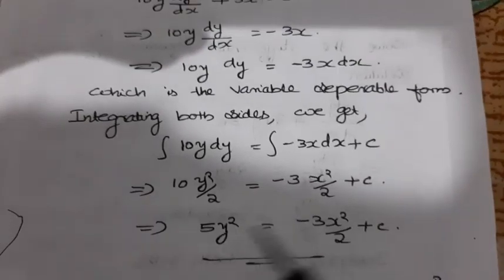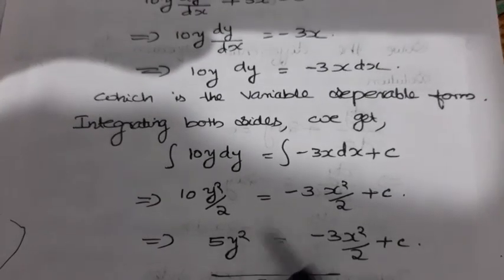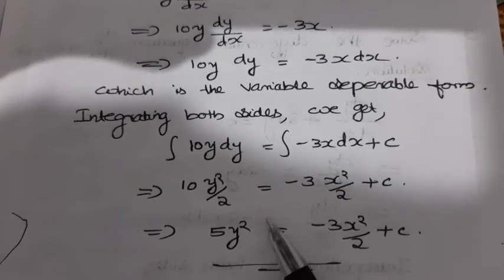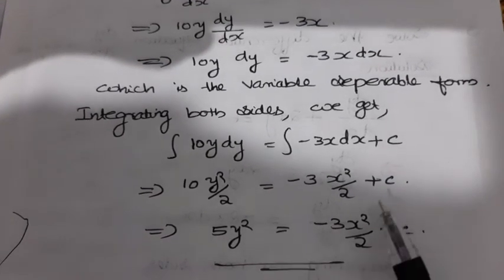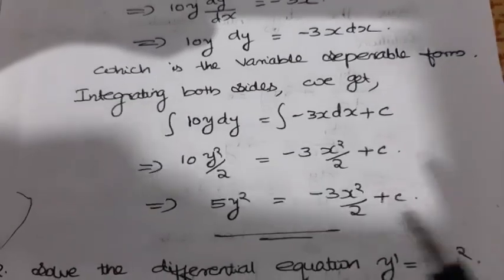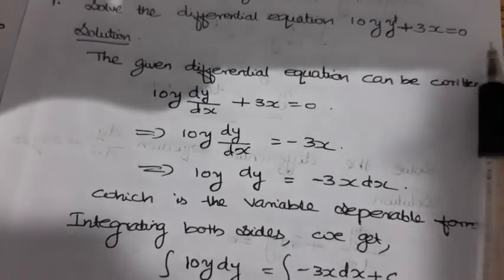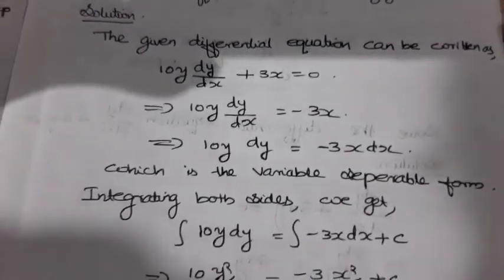Then 10 and 2 are cancelled, giving 5y² = −(3/2)x² + c. This is the general solution of the differential equation 10y·y' + 3x = 0.